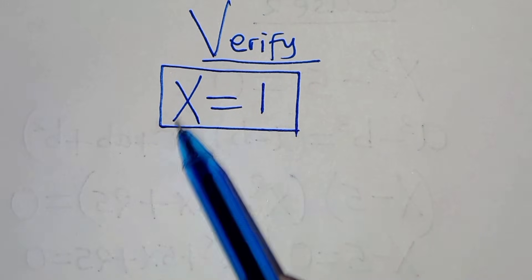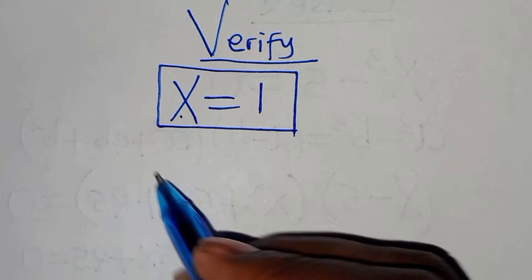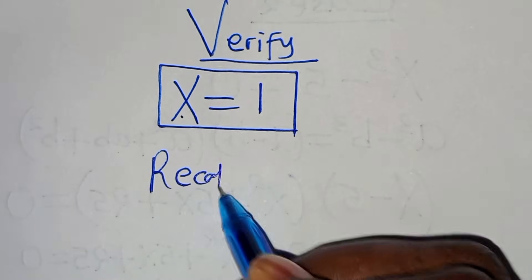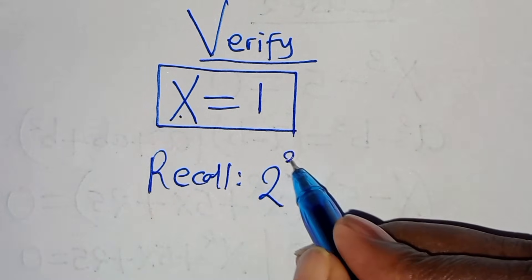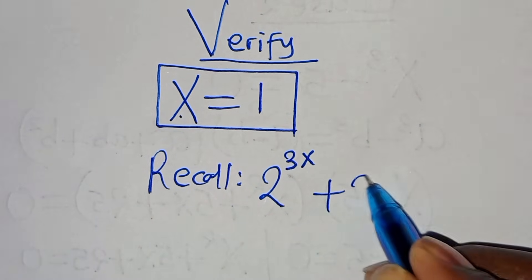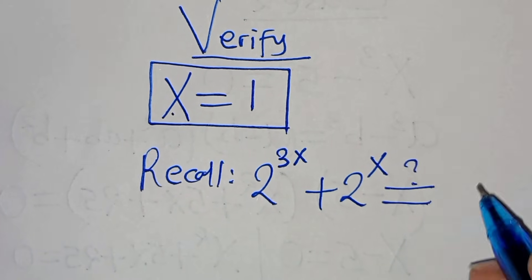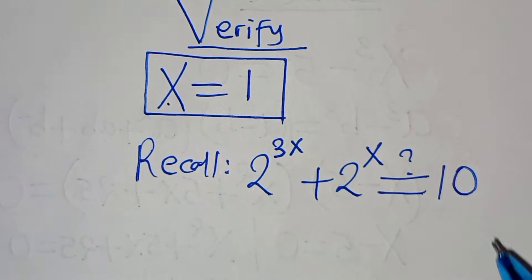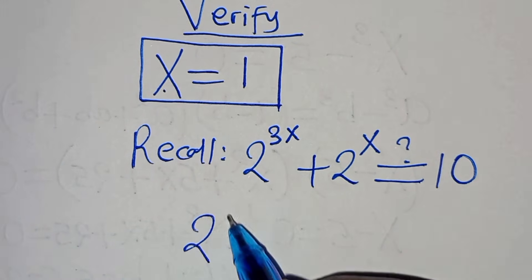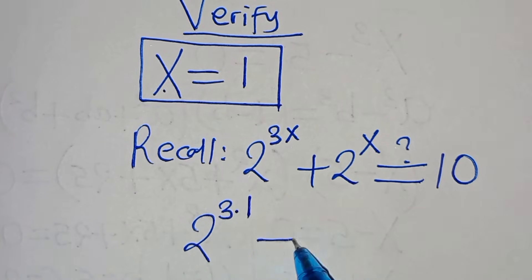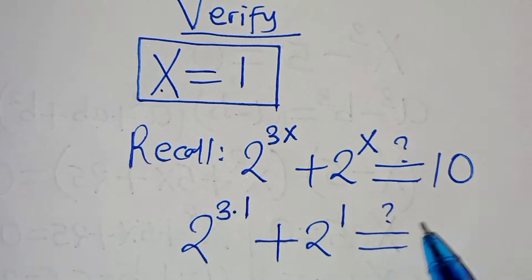Now let's verify that x equals 1 satisfies the equation. Recalling that we have 2 to the power of 3x plus 2 to the power of x, this should give us 10. Substituting x equals 1: 2 to the power of 3 times 1, plus 2 to the power of 1, should give us 10.